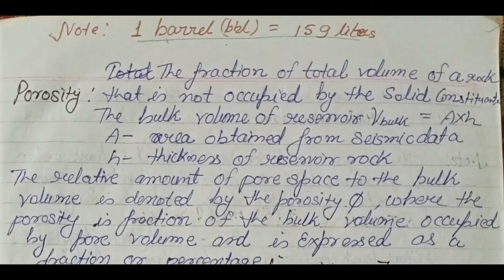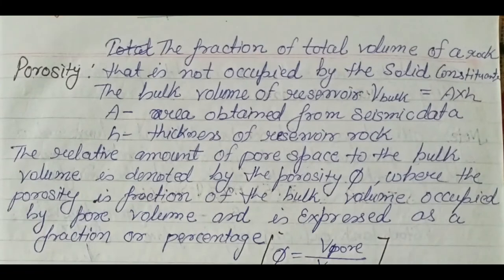So what is porosity? It is basically the fraction of total volume of rock that is not occupied by the solid constituents. The bulk volume of a reservoir is area times height — area obtained from seismic data and thickness of the reservoir rock. The relative amount of pore spaces to the bulk volume is denoted by porosity phi.